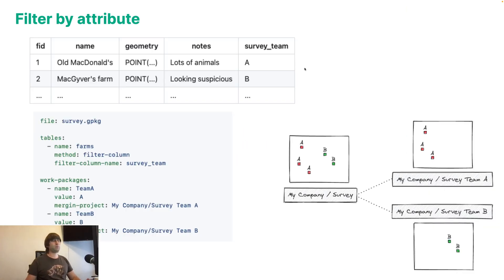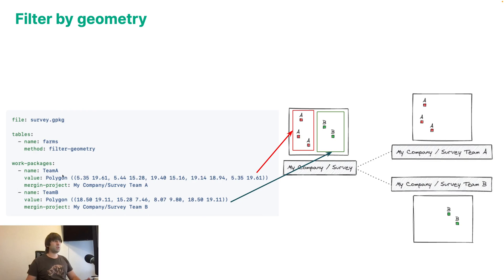The first option is to filter by attribute. Imagine you have a GeoPackage with a specific database structure — you can assign some points to team A and some points to team B. This is a configuration file of the Mergin Work Packages tool that filters by a column name 'survey team' to create two sub-projects. The other option is to filter by geometry. You can specify a geometry area in a configuration file, and it works the same way but based on geometry.